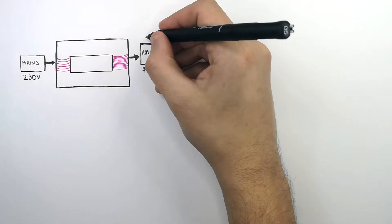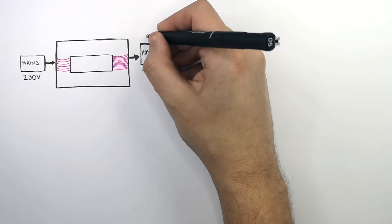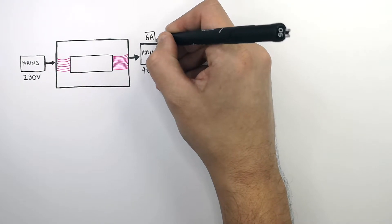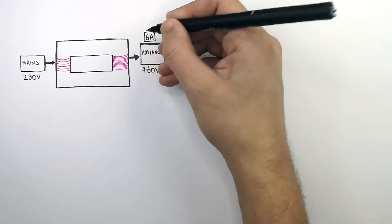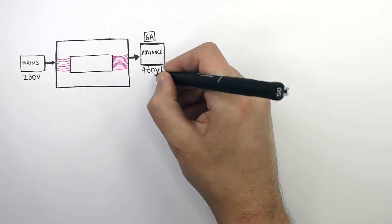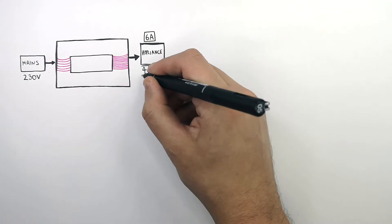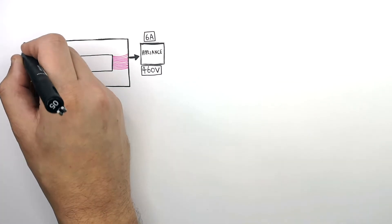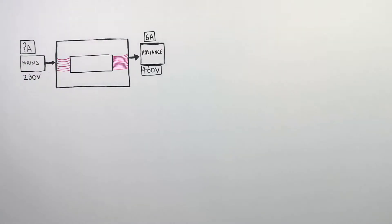The current across the secondary coil is 6 amps, and the potential difference across the secondary coil is 460 volts. We are going to calculate the current that is supplied across the primary coil.